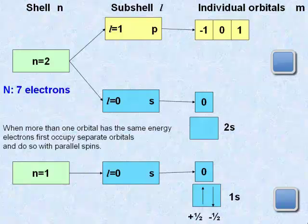Now, in the n equals 2 shell, we have the 2s subshell and the 2p subshell. The 2s subshell is at a lower energy level, and so we fill the 2s first.